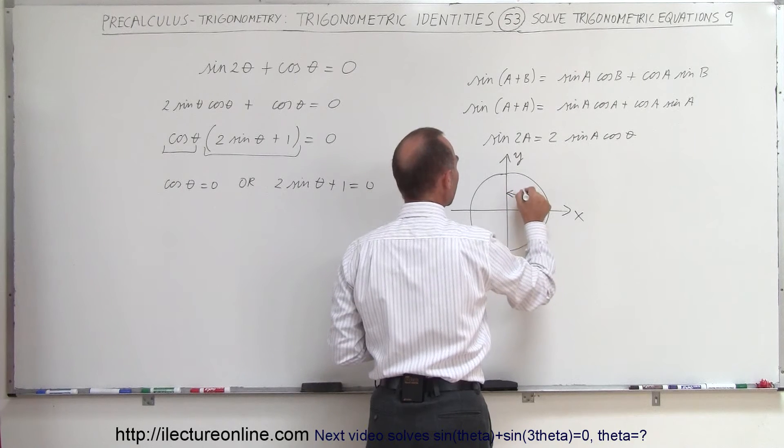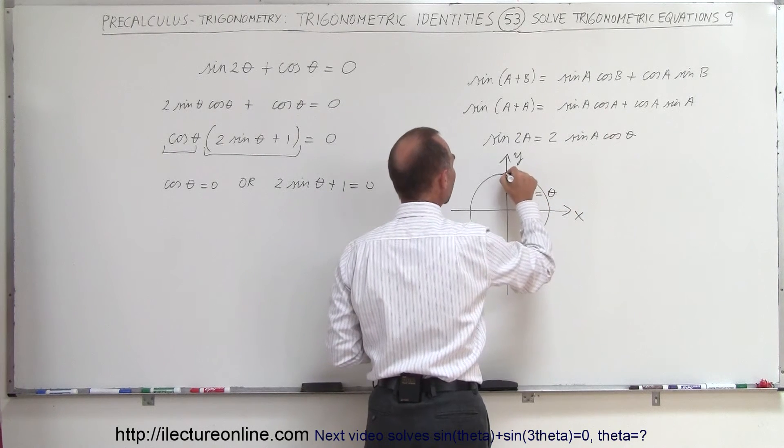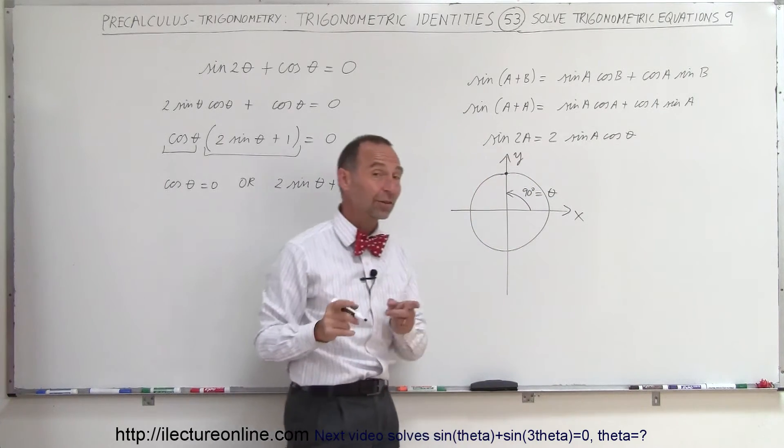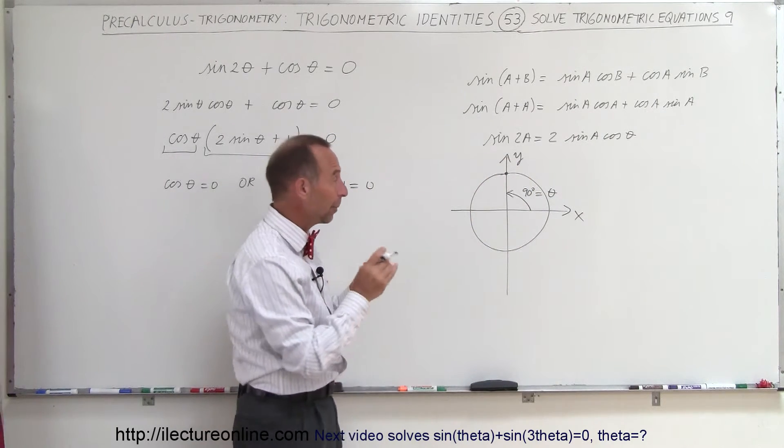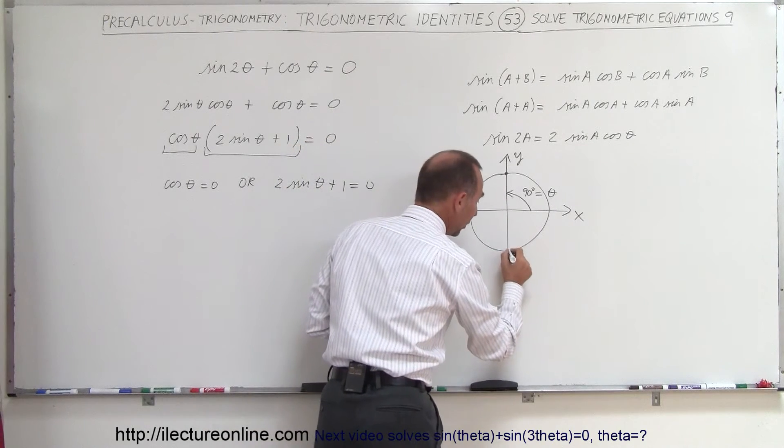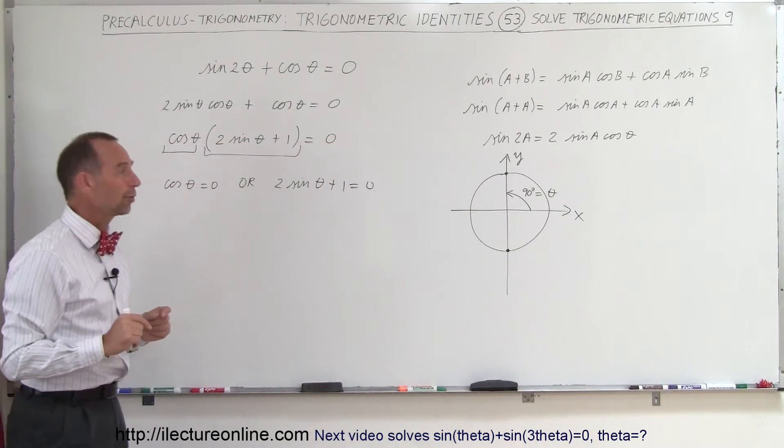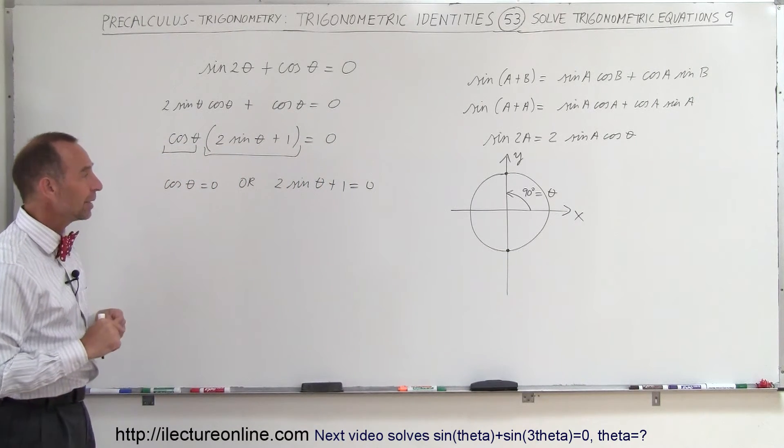And for example, if the angle is 90 degrees—if theta is equal to 90 degrees—at that point, the x value of that point is equal to 0. Remember that the cosine of the angle represents the x value on the unit circle. But there's another place down there where the x value is equal to 0.